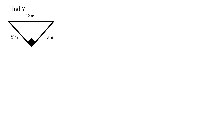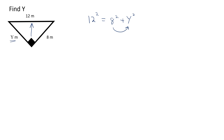To find y, the key is to identify the hypotenuse. The 90 degree angle is shown here, so the hypotenuse is the side facing it. In our formula we will have 12 squared equals 8 squared plus y squared. By the way, it doesn't matter if you put the y before the 8 on the right side, because addition is commutative.